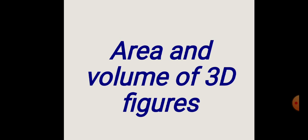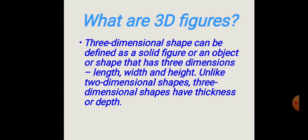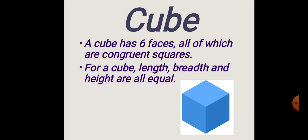Today we will learn how to find the area and volume of 3D figures. A 3-dimensional shape can be defined as a solid figure or an object that has 3 dimensions: length, width, and height. Unlike 2-dimensional shapes, 3-dimensional shapes have thickness or depth. The 3 dimensions are length, breadth, and height.